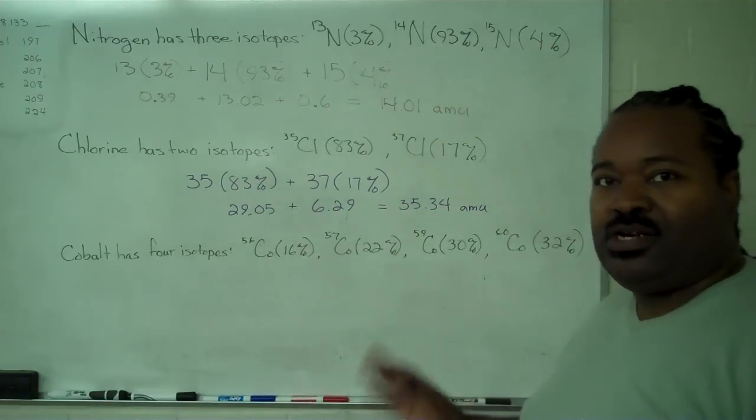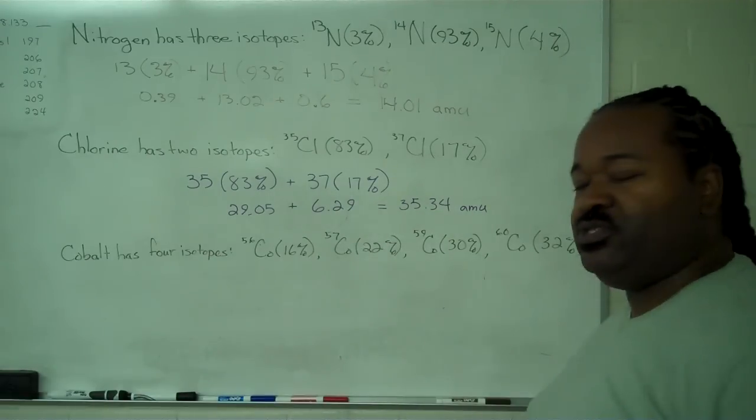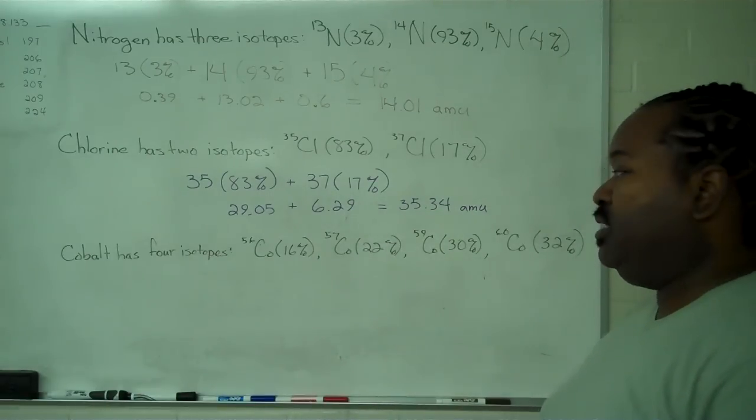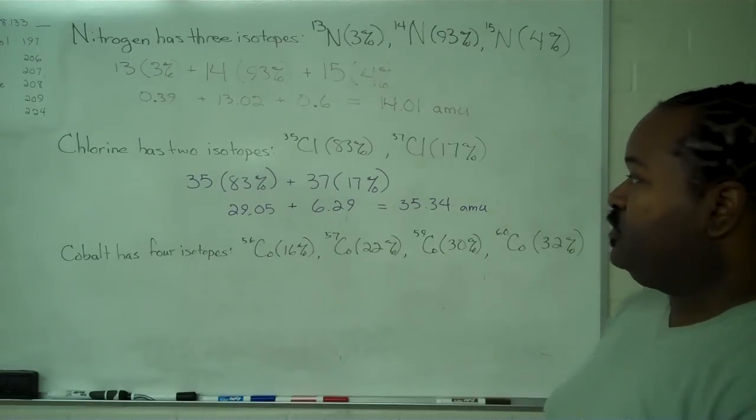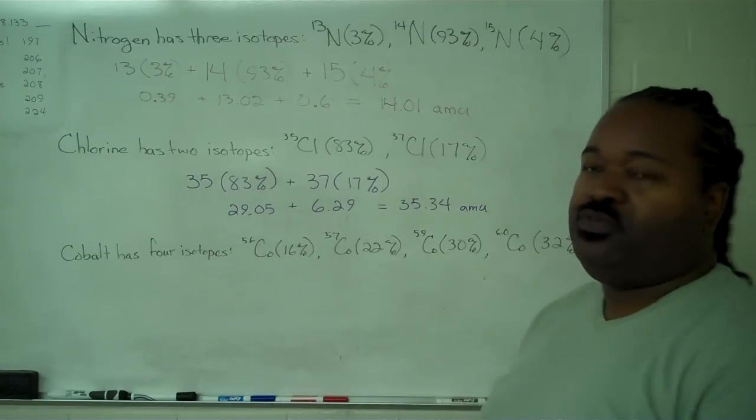And again, these are not the official atomic masses. These are just the results we get from the numbers made up for these examples. So finally, we have cobalt with four isotopes.